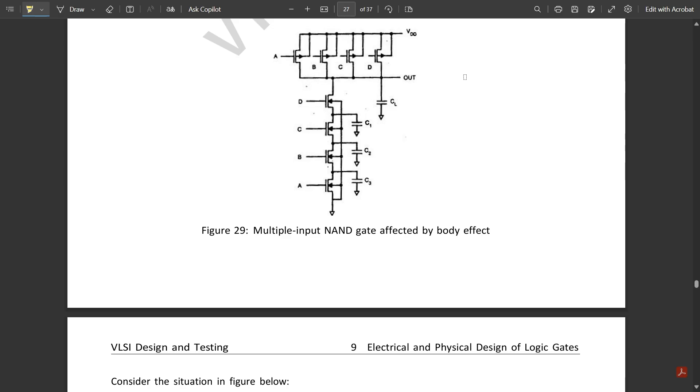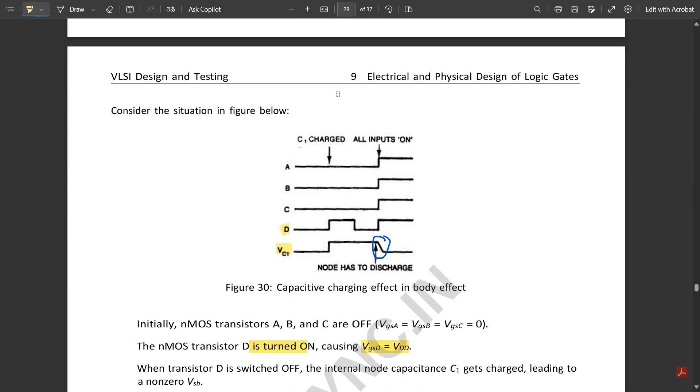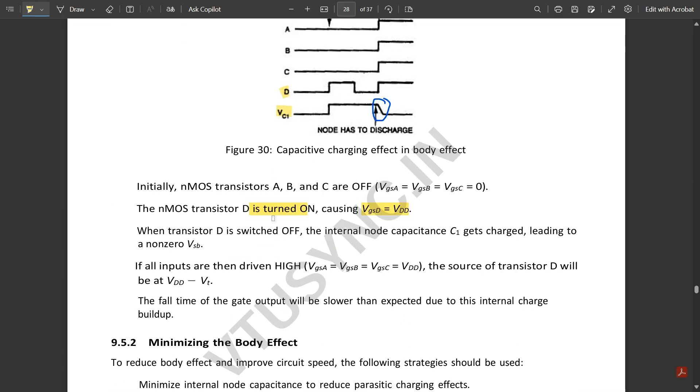When the transistor is switched off, the internal node capacitance C1 would be getting charged leading to non-zero Vsb output. If all inputs are driven high, Vgsa equals Vgsb equals Vgsc equals Vdd.